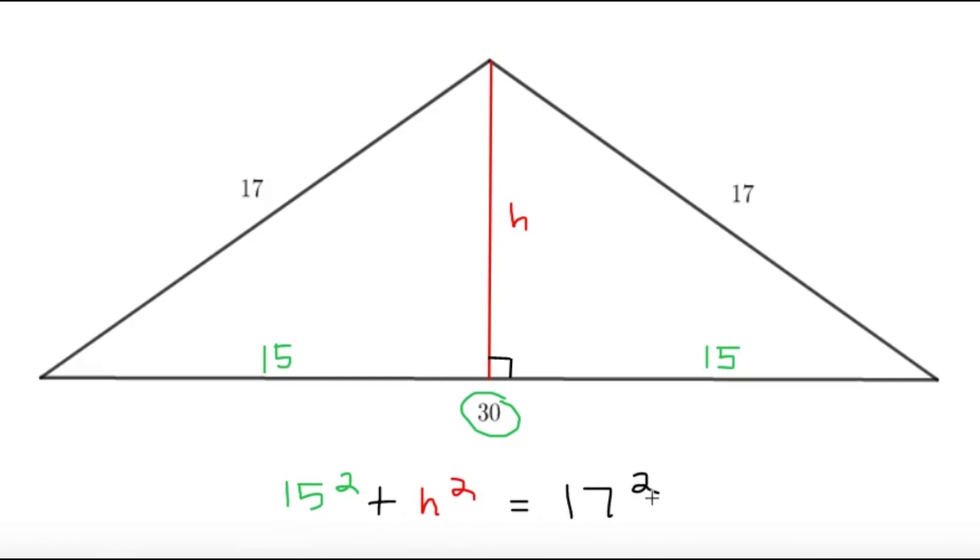Since 15, h, and 17, we have a very famous Pythagorean triple here and we know that h equals 8, the well-known Pythagorean triple of 8, 15, and 17. So we can conclude that h is 8.